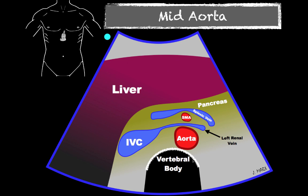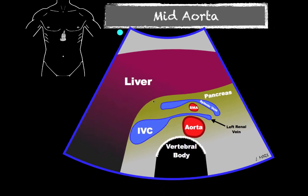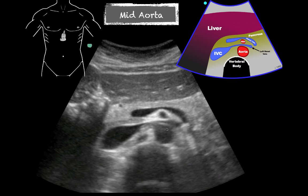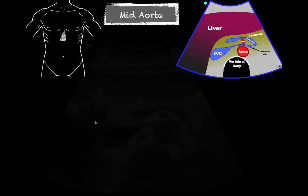We have our vertebral body here, and the aorta sitting just anterior and slightly to the left — remember the patient's right is over here and the patient's left is here. A vessel comes from left to right, going between the SMA and the aorta, and jumps right into the IVC — that's our left renal artery. The vessel that goes anterior or superficial to the SMA is actually our splenic vein, which is going to turn into our portal vein. Sometimes we can see the liver as well.